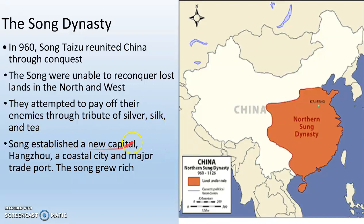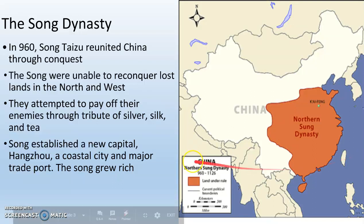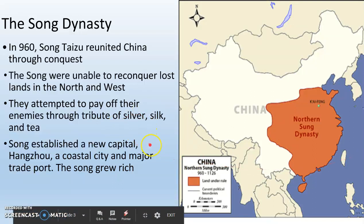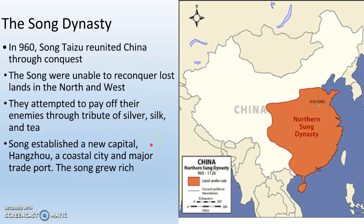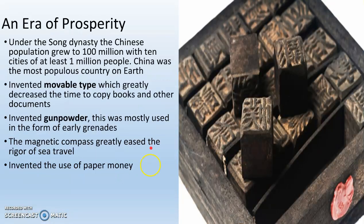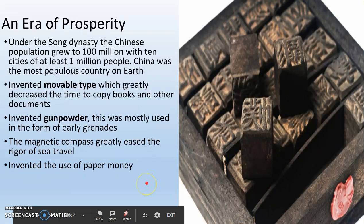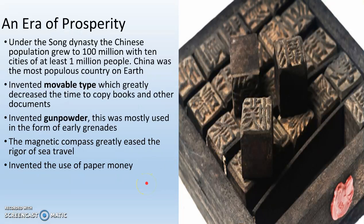The Song established a new capital, Hangzhou, a coastal city and major trade port. The Song are growing rich by trading their silver, silk, and tea. This is an era of prosperity for the Song and for medieval China.